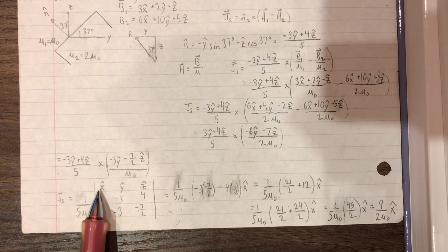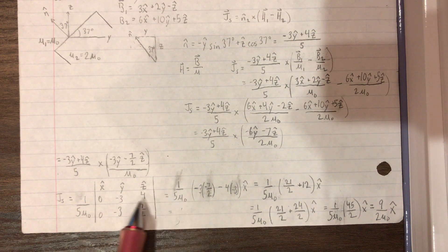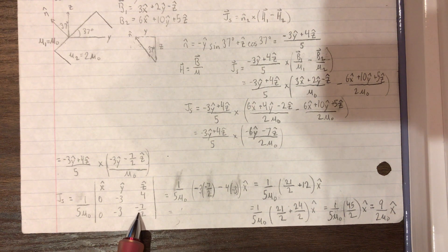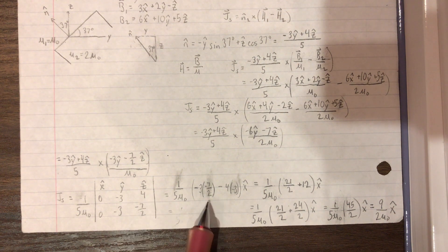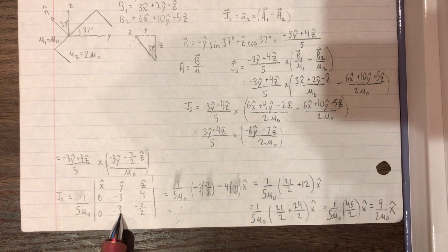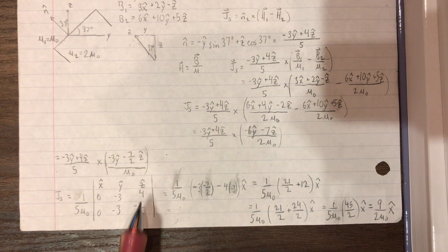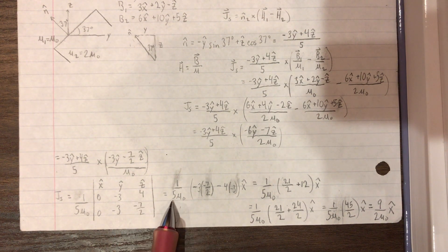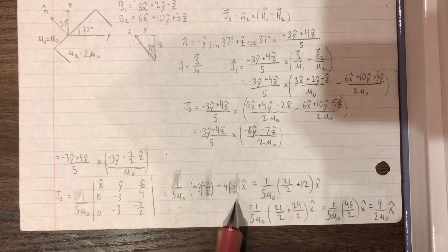So doing the cross product, it's negative 3 times negative 7 over 2, which is this, subtract negative 3 times 4. So then we have this for our x components.